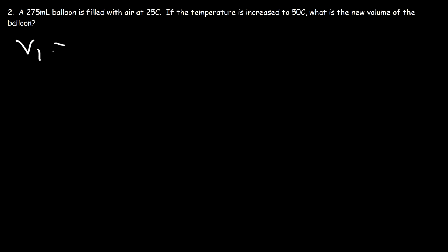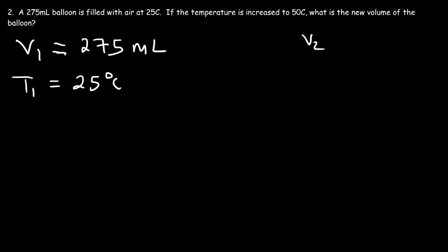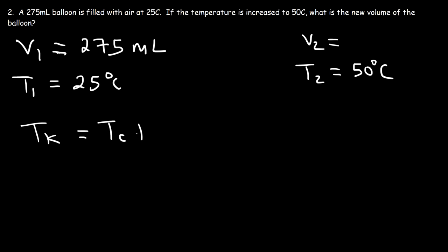Let's work on this problem. V1 is 275 milliliters, T1 is 25°C, we're looking for V2, and T2 is 50°C. We need to convert the Celsius temperatures to Kelvin by adding 273. So 25 + 273 = 298 Kelvin, and 50 + 273 = 323 Kelvin.